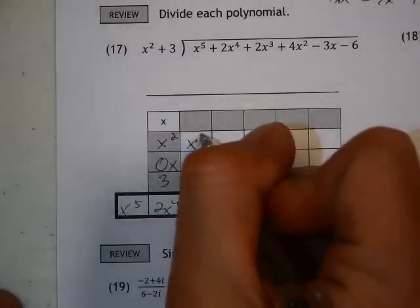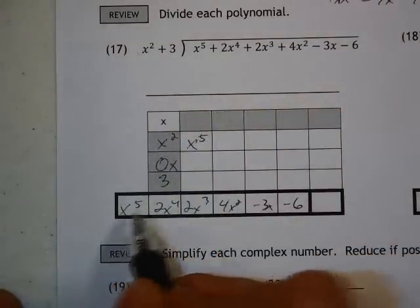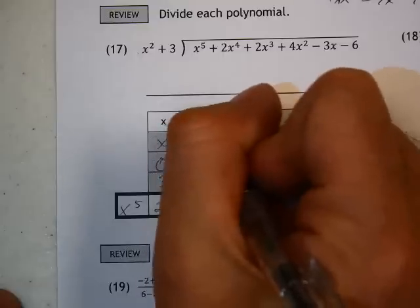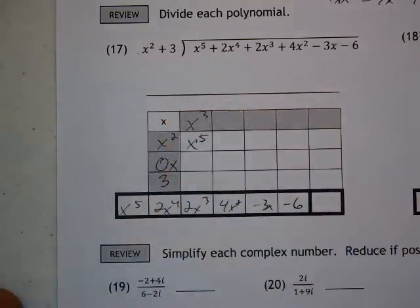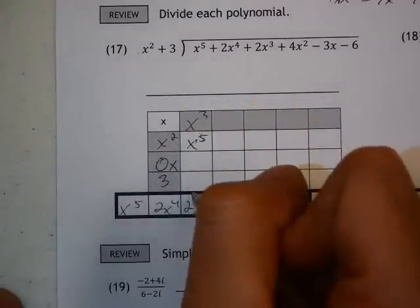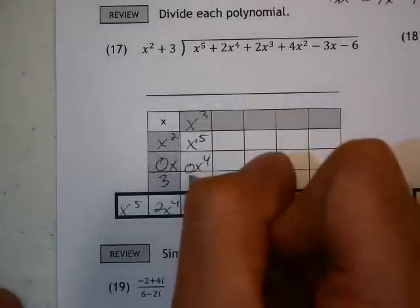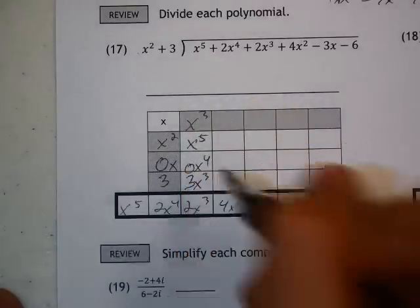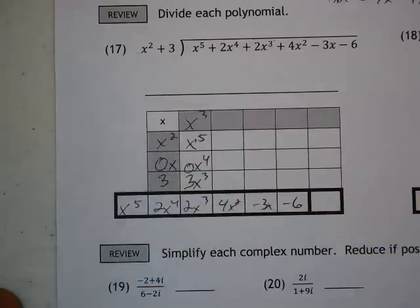So, I know this is x to the 5th from that first term, which means this will be x to the 3rd. I'm going to go ahead and multiply it through everything. This will be 0x to the 4th, 3x to the 3rd. That's x to the 3rd times both of those.